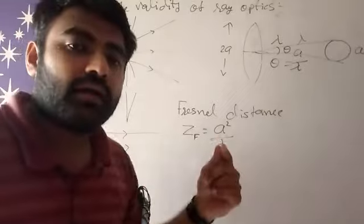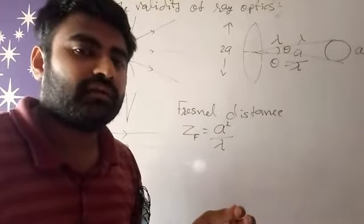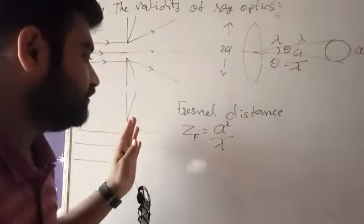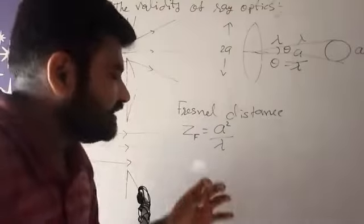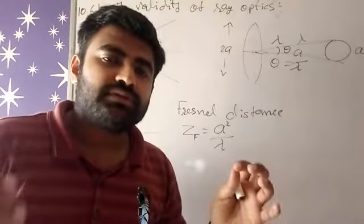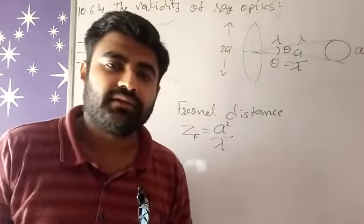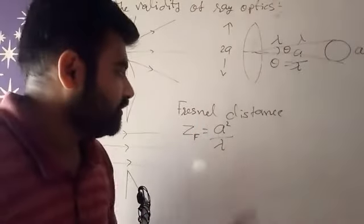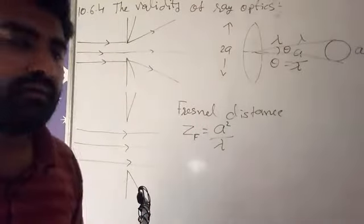Where if I decrease it even slightly, then immediately diffraction will start. So that minimum distance, where still there is no diffraction, that distance is called Fresnel distance and the formula is A square upon lambda. Right.